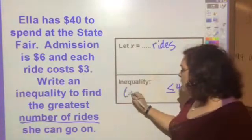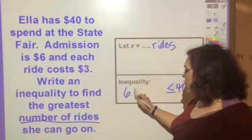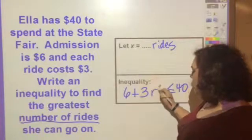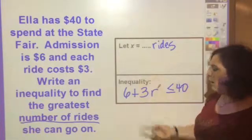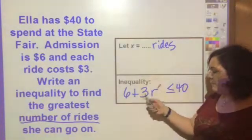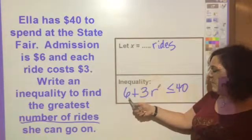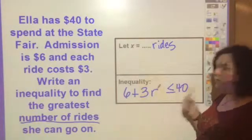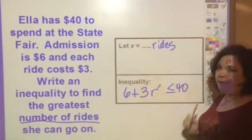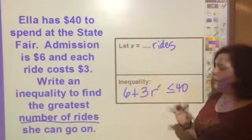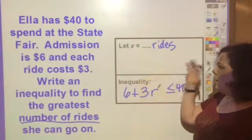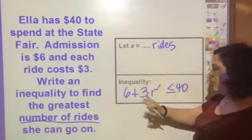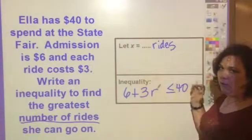Admission is six dollars and each ride is three dollars, so 3 times the number of rides plus 6 has to be less than or equal to 40. That's how you turn words, numbers, situations, and operations into inequalities.